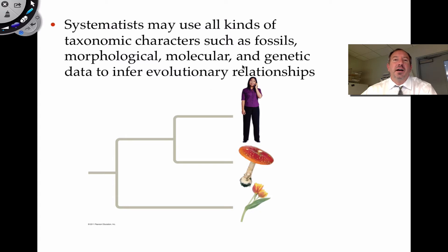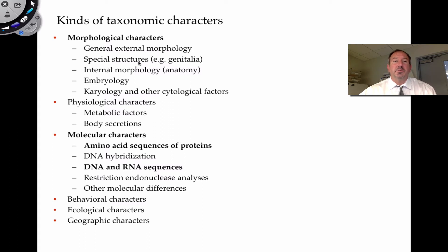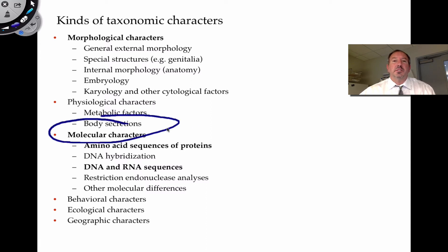Historically, we relied on fossils and morphological data. Morphological characteristics refer to the general external appearance of organisms — like sorting rubber bands, metallic things, and plastic things into different drawers. Specialized structures like genitalia can be used, as well as internal anatomy, embryology, karyotypes, and physiological factors such as metabolic data and body secretions. And then there is molecular data, which is our go-to these days.